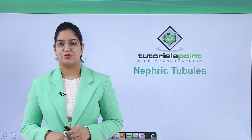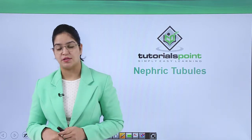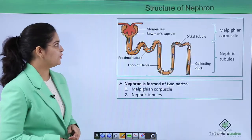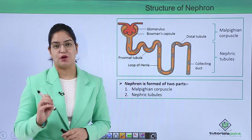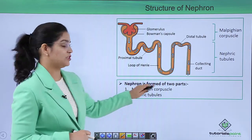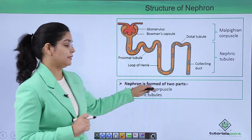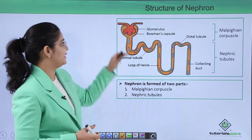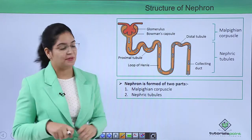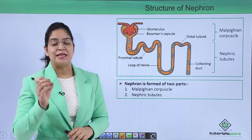Hello guys, welcome back to Tutorials Point. Today we are going to learn about a very important topic: nephric tubules. In the earlier video we talked about the structure of the nephron. In the structure of the nephron there are two parts: the Malpighian capsule and the nephric tubule. About the Malpighian capsule we have talked already — it contains Bowman's capsule, in which a tuft of capillaries called the glomerulus is present.